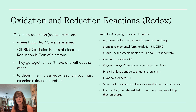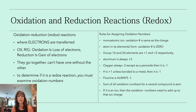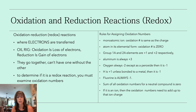Some books use LEO GER: loss of electrons is oxidation, gain of electrons is reduction — whatever works for you. To determine if something is a redox reaction, you need to examine oxidation numbers. These are not necessarily the same as the charges on the periodic table. If you have a monoatomic ion all by itself, the oxidation number is the same as the charge. So if the reaction says Cu2+, that's a monoatomic ion with a 2+ charge — the oxidation number is +2. Any atom in its elemental form has an oxidation number of 0. So if it says Mg, it's 0. If it says O2, that's how oxygen naturally exists, so it's 0.